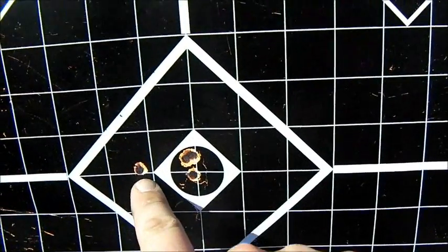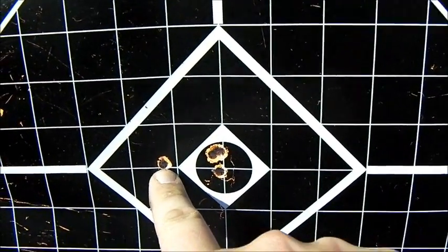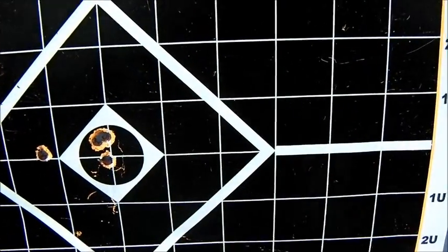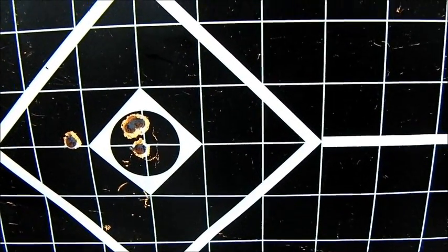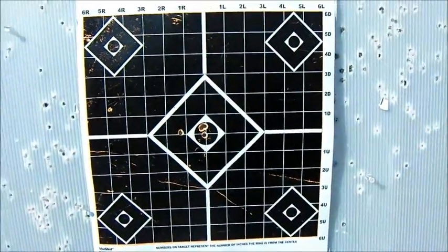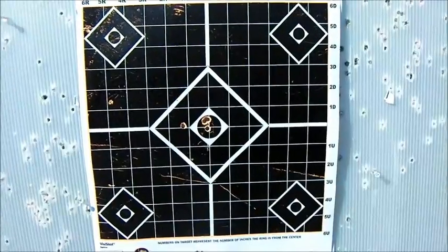And it's hard to say whether this was the round or me. Most likely, that was me. That was my error. But you can see that's about a half MOA, maybe just a hair over half MOA hole. And I am impressed with this Bushmaster varminter. I'm extremely impressed.